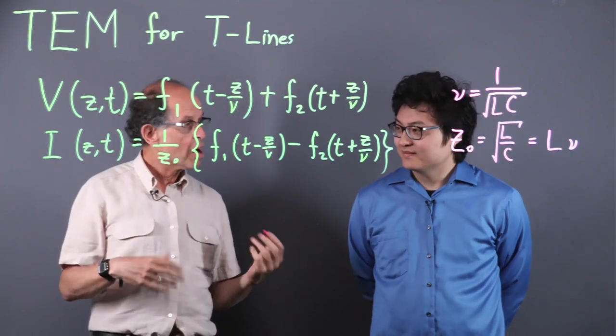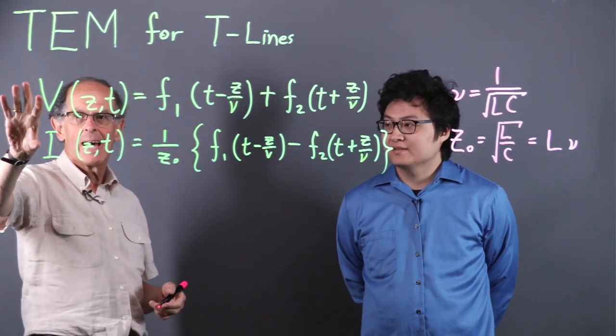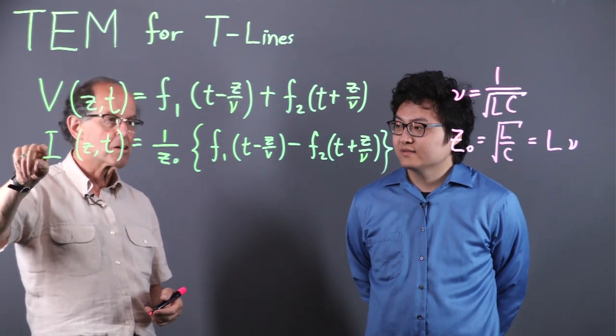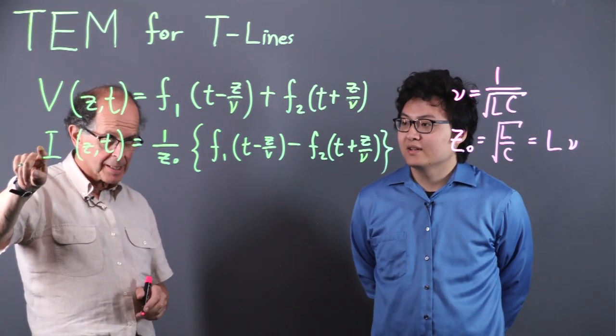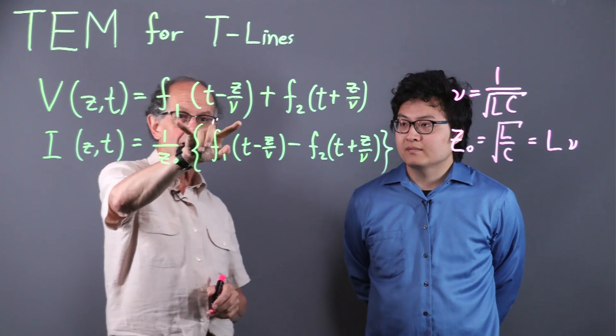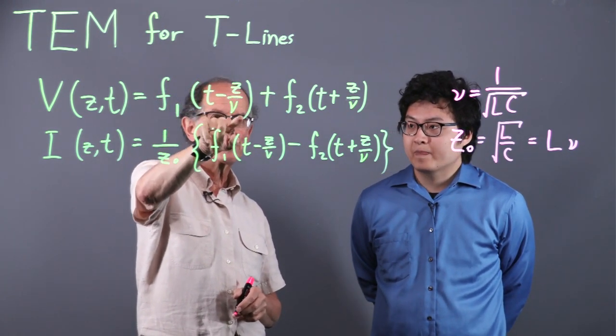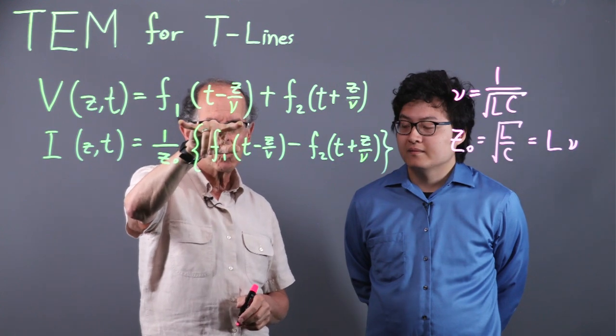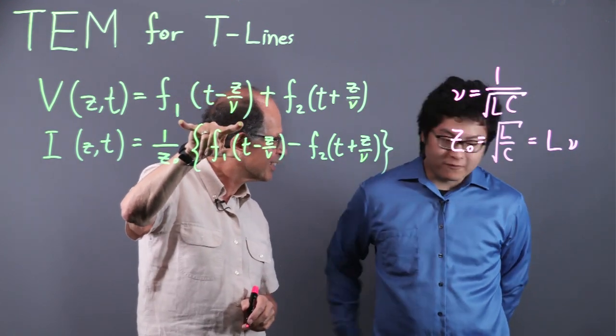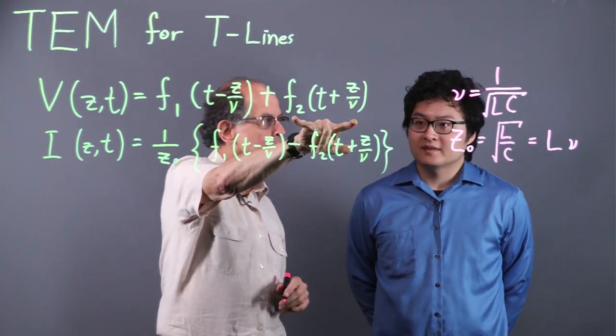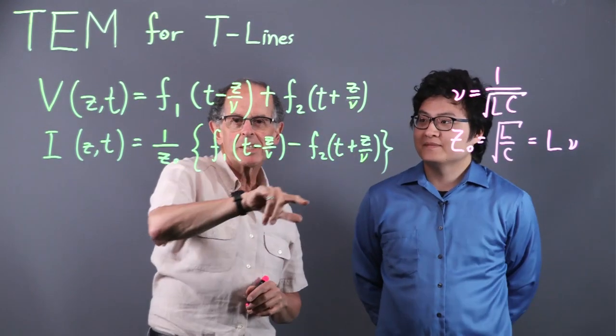So we start with what we began a while back. We've got an expression for the voltage and current along a transmission line. And we have this one, a function that's delayed with this argument. And this wave here is going in which direction? Forward. Forward, to the right. And this one? Backward. Backward waves.